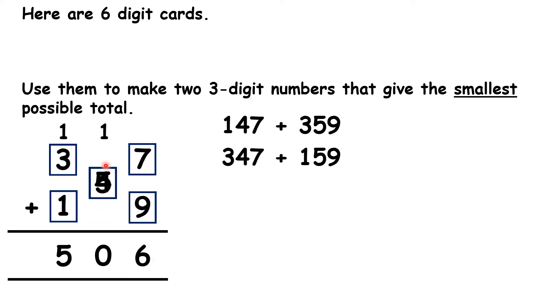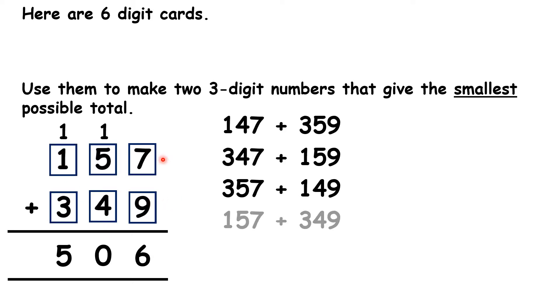We could switch our tens digits around, so that we have 357 plus 149. Are there any other numbers that work? Well, if we move our hundreds back, we now have 157 plus 349.